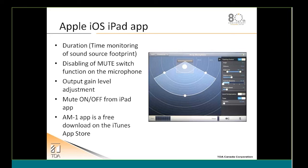Duration adjustments let you set how long the unit traces a particular area — configured in milliseconds — controlling how aggressively it stays on a sound source. You can also disable the physical mute switch on the microphone from the app, useful if an operator is managing the unit remotely and wants to prevent someone from accidentally pressing the mute button. Output gain level adjustment is also available to boost the signal from the AM1C to your mixer. The app is free to download.